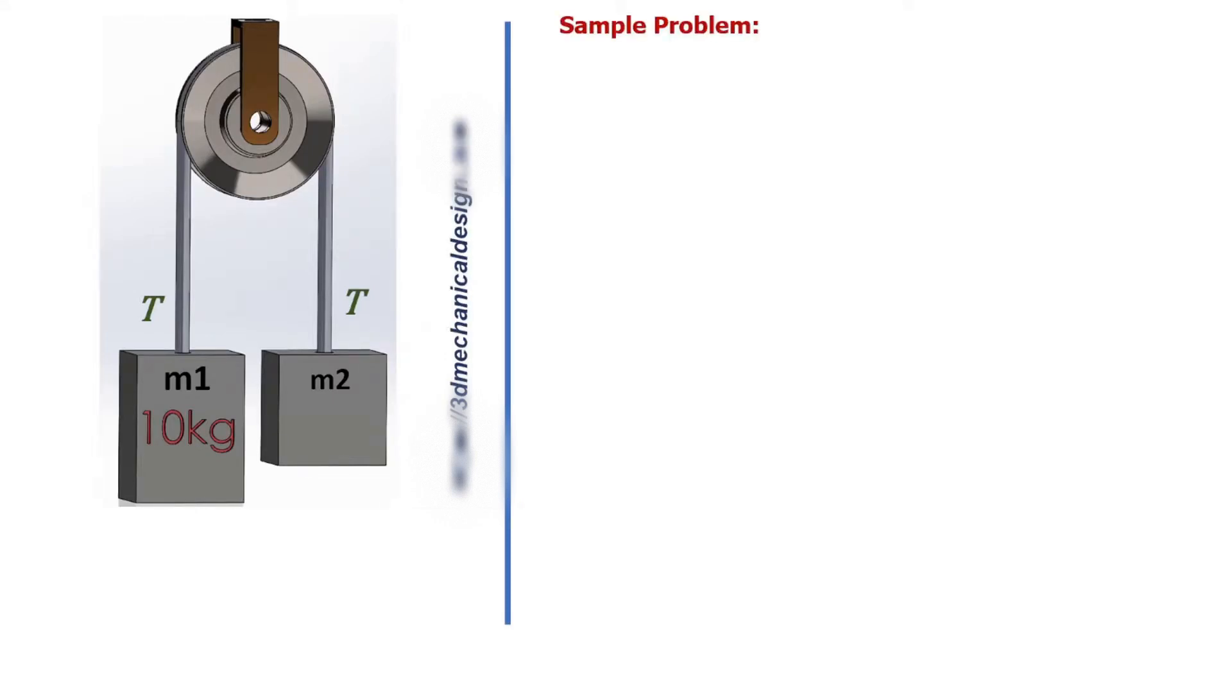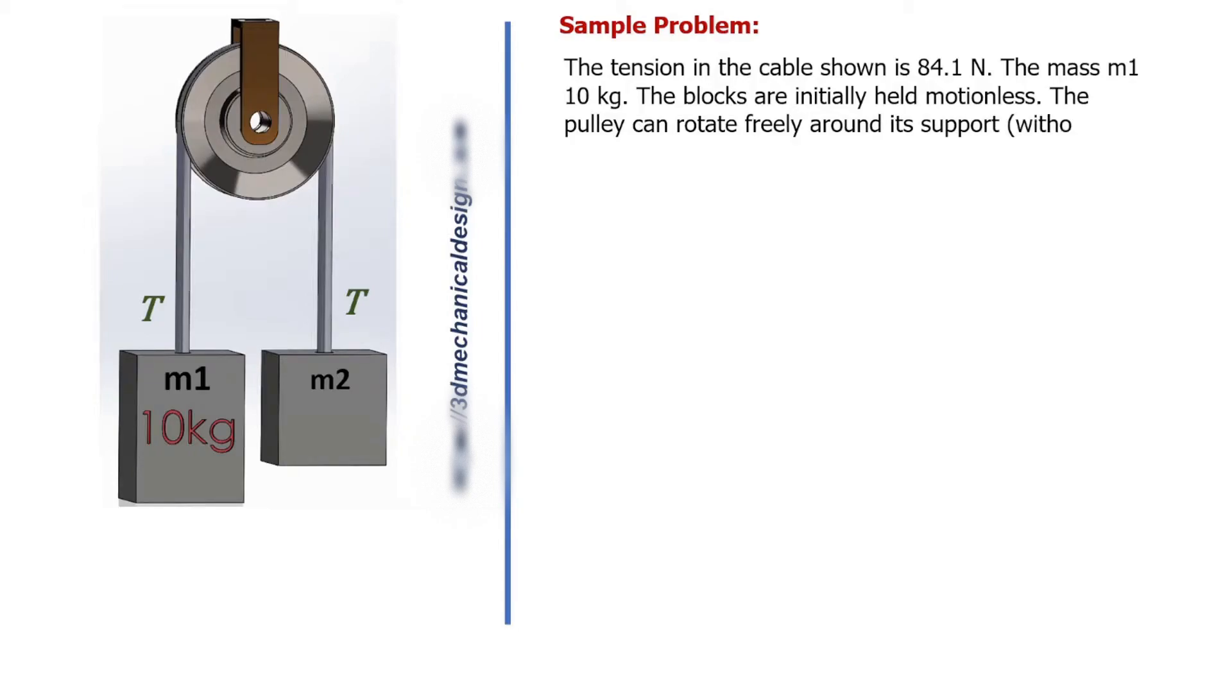Sample Problem. The tension in the cable shown is 84.1 N. The mass M1 is 10 kg. The blocks are initially held motionless. The pulley can rotate freely around its support, without friction.